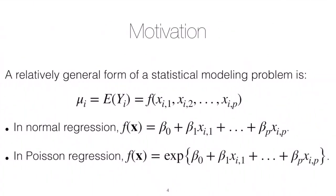Generally, we can think about statistical modeling as trying to model the mean of the response. We have some mean equal to the expected value of our response, and that equals some function f of our predictors. In normal linear regression, that function is a linear function — a linear combination of predictors and parameters.